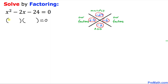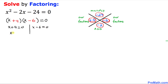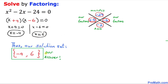We write x in both parentheses, then place positive 4 in the first parenthesis and negative 6 in the second, giving us (x + 4)(x − 6) = 0. Setting each factor equal to zero: x plus 4 equals 0 gives x equals negative 4, and x minus 6 equals 0 gives x equals positive 6. Our solution set is confirmed as x equals negative 4 and x equals 6.